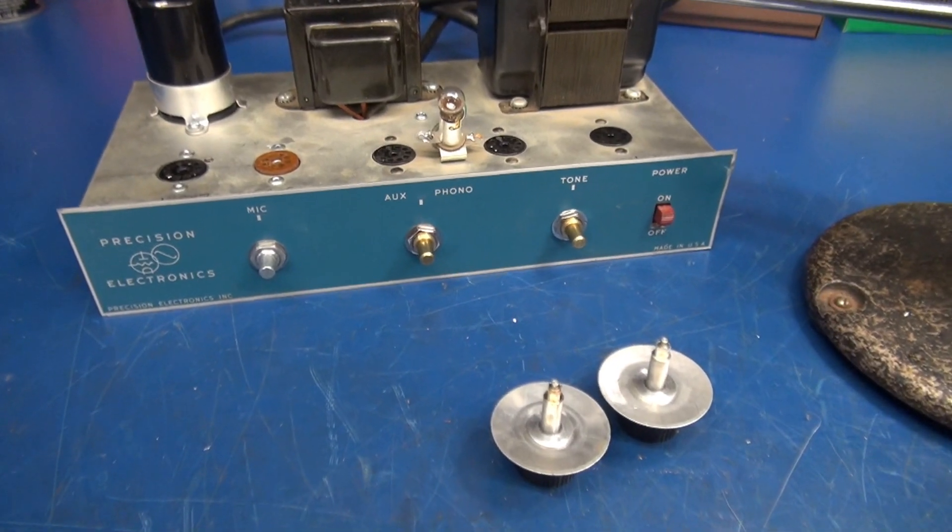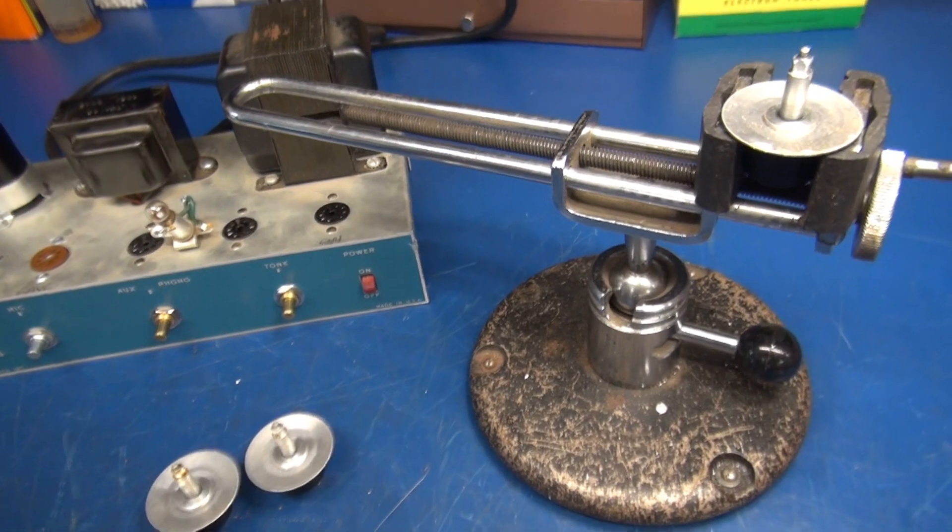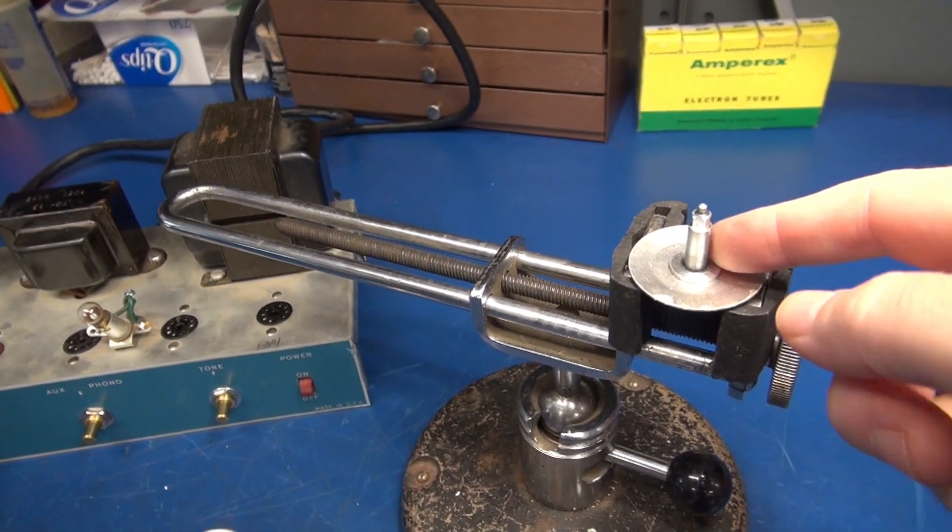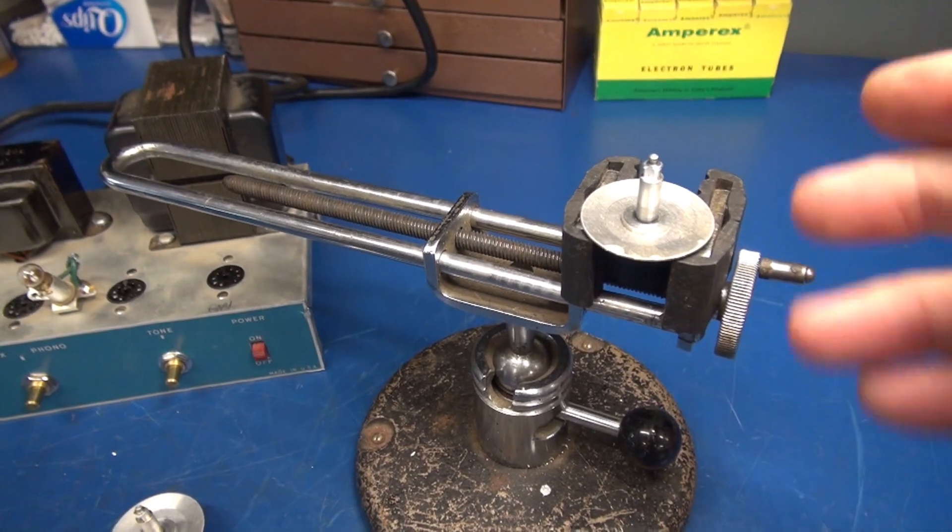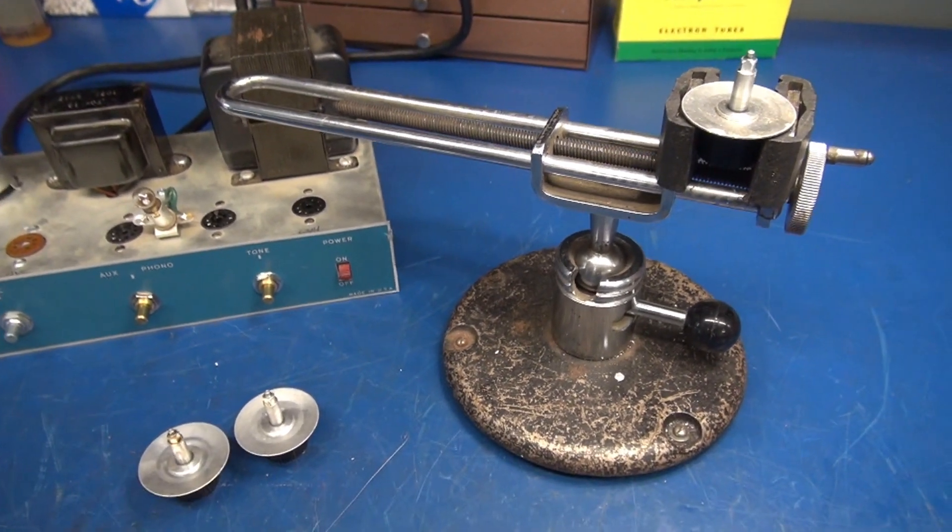All right, there's the three new pots installed. Next task is to see if I can retract these shafts. I'm going to use a heat gun, a little oil, set screws right there. See if I can get those out so I can reuse the knobs.